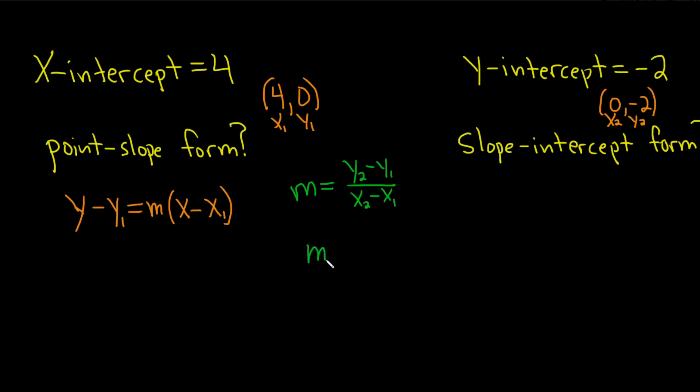So m is equal to: y2 is negative 2, minus y1 is 0, over x2 is 0, and then x1 is 4.